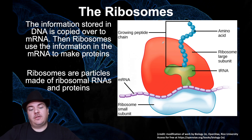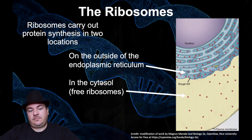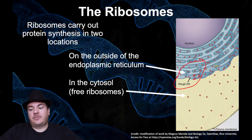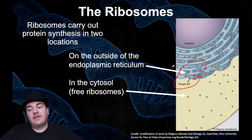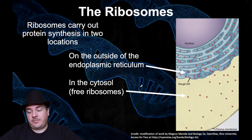The ribosome is made out of two types of things: ribosomal RNA and proteins. Ribosomes carry out protein synthesis in a couple of different locations inside your cells. One place you can find ribosomes building proteins is stuck on the outside of the rough ER — those red little dots are ribosomes. Another place where you find ribosomes is just floating around inside the cytosol or cytoplasm.